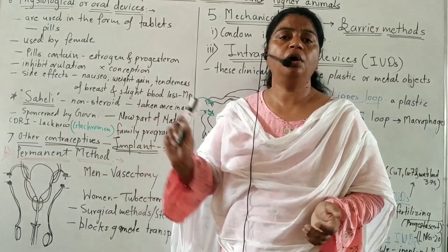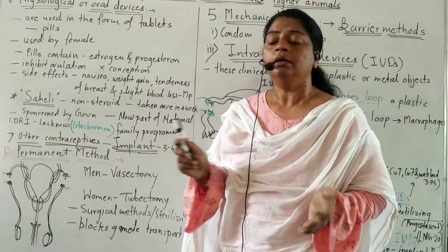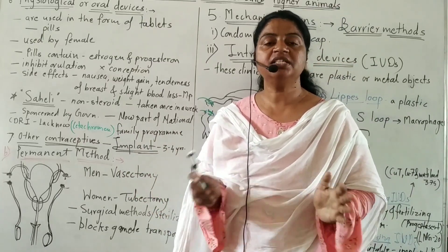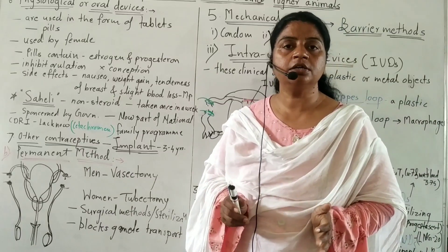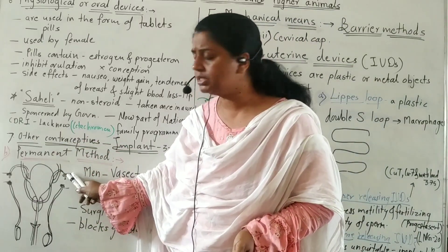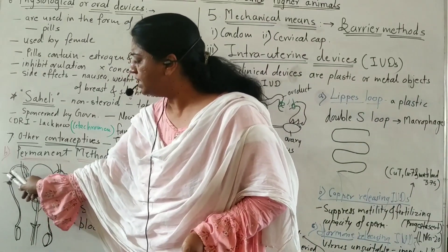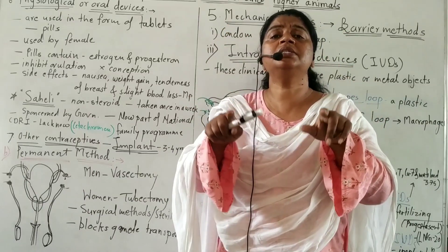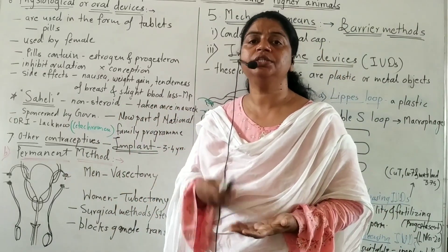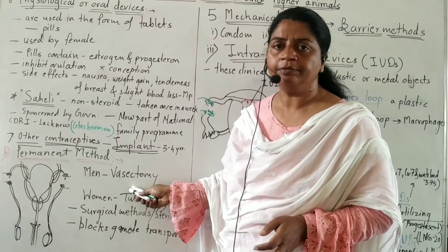These are the temporary methods of birth control. The second method is the permanent method. In men, vasectomy is the permanent method; in women, tubectomy is the permanent method. These are also called family planning operations or surgical sterilization. In vasectomy, a small part of the vas deferens is tied off and then cut — both vas deferens are tied and cut — preventing sperm transport, so there is no fertilization and no pregnancy.